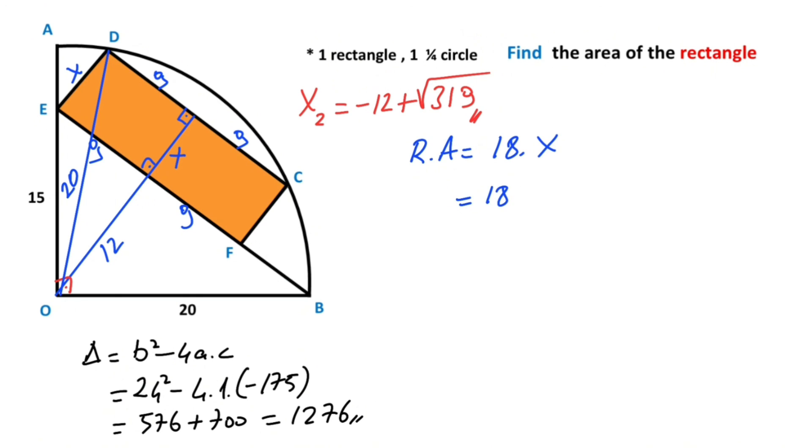So 18 times (minus 12 plus root 319). So rectangular area equals 18 times root 319 minus 216 units squared.